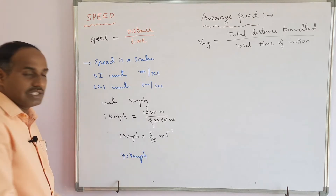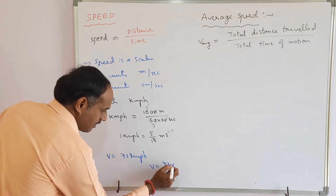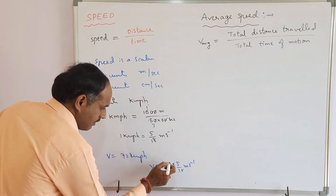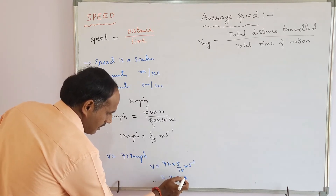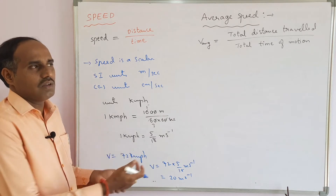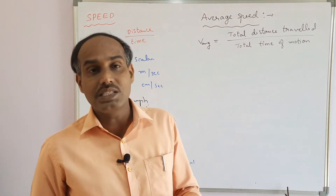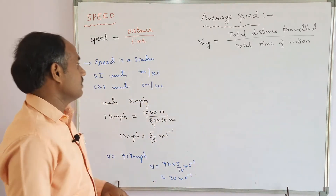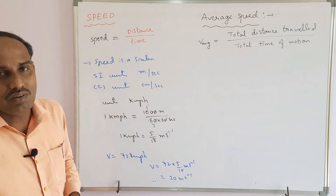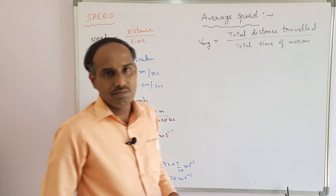For example, if a body moves at 72 km/h, we write 72 × (5/18) = 20 m/s. This is how we convert kilometer per hour into meter per second. Speed is the ratio of distance covered per unit time — the distance may be rectilinear or curvilinear. Since it has no specific direction, speed is a scalar quantity.